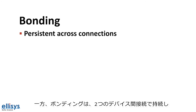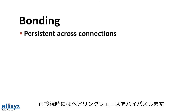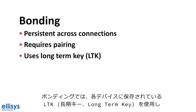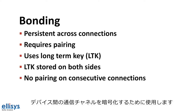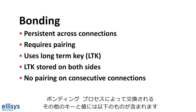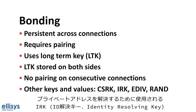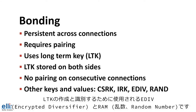Bonding, on the other hand, persists across connections, allowing devices to bypass the pairing phase on subsequent connections. To bond, two devices must go through the pairing phase once. Bonding uses a Long-Term Key stored on each device to encrypt the communication channel. Other keys and values exchanged during bonding include the Connection Signature Resolving Key (CSRK), used to sign and verify transmitted data; the Identity Resolving Key (IRK), used to resolve private addresses; and the Encrypted Diversifier (EDIV) and Random Number (RAND), used to create and identify the LTK.